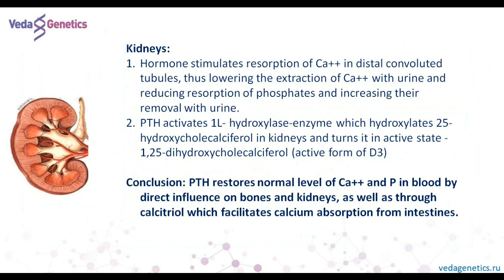In the kidneys, the hormone stimulates calcium resorption in the distal convoluted tubules, thereby reducing its excretion with urine. But it reduces the resorption of phosphate and thus increases its excretion with urine. Interestingly, parathyroid hormone not only returns calcium back from bones and urine, but it is also responsible for the concentration of vitamin D. Parathyroid hormone restores the normal level of calcium and phosphorus in the blood by direct action on bones and kidneys, and by calcitriol which stimulates the absorption of calcium from the intestine.